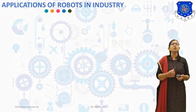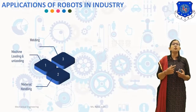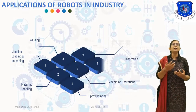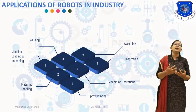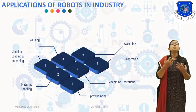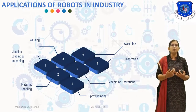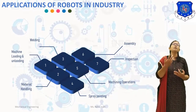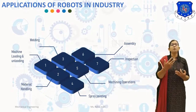We will discuss different applications of robots in industry. The first application is machine loading and unloading. Robots are used for loading and unloading of parts in CNC machining centers, flexible manufacturing systems, die-casting machines, and punching presses. The use of robots in such machines reduces part handling time, thereby reducing cycle times and improving productivity. The robot should be able to orient the workpiece correctly so as to locate it accurately in the machine.